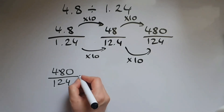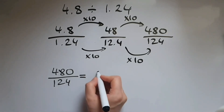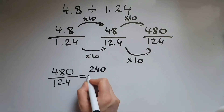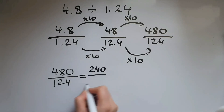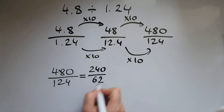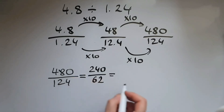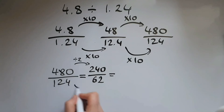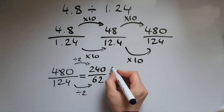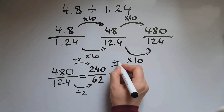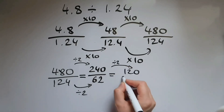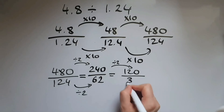Now we can simplify the fraction. 480 divided by 124 — I can divide both by 2, giving me 240 over 62. I can still divide both by 2, giving me 120 over 31.